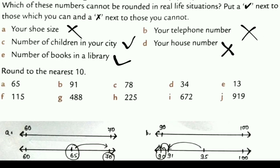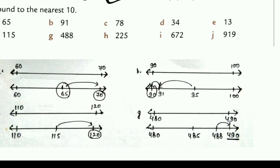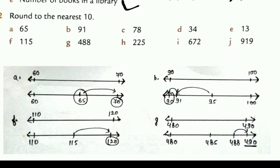Next question is round to the nearest 10. That is 65. 65 is the mid value. Mid value means it will go to next one. 65 means between 60 and 70. What is the mid value? That is 65. It will go to 70.